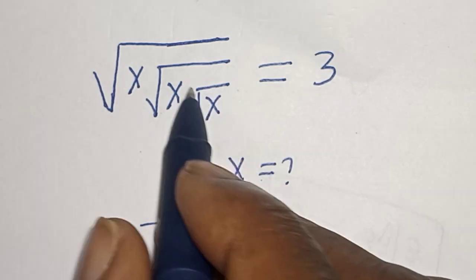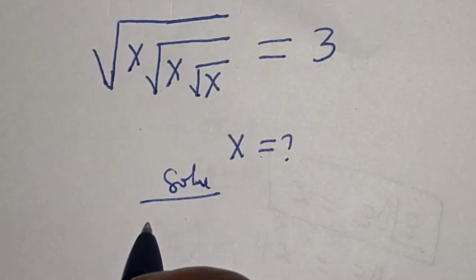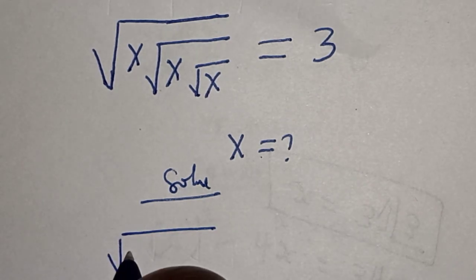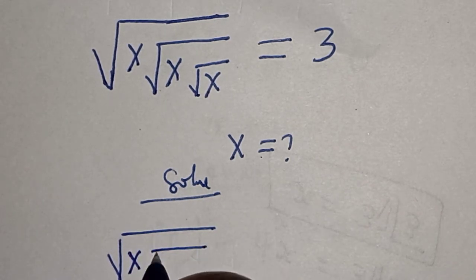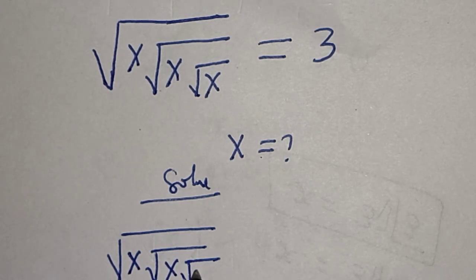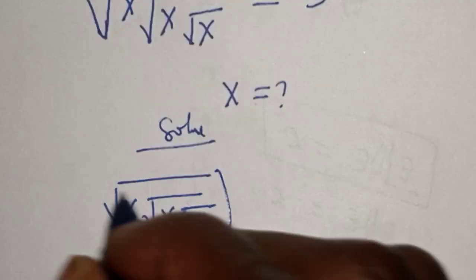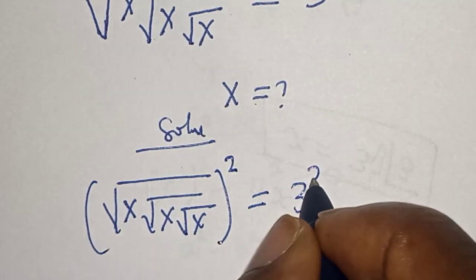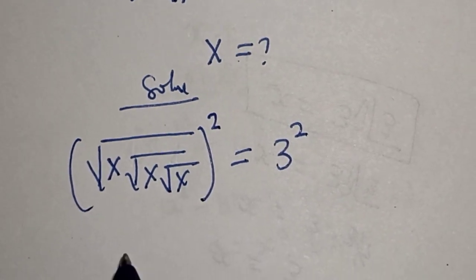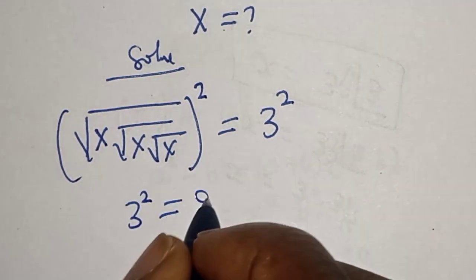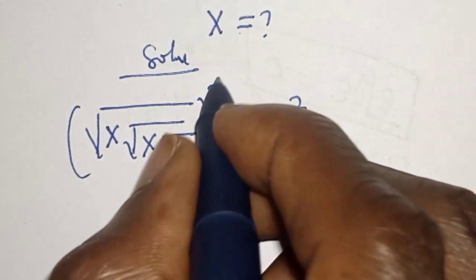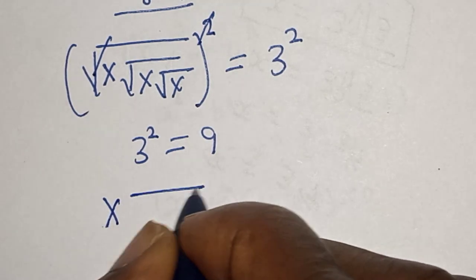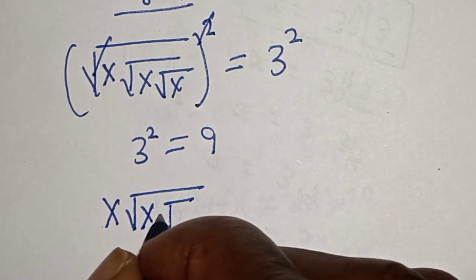Then, let's square both sides. That is, square root of x, square root of x, square root of x, squared, is equal to 3 squared. 3 squared is equal to 9. Then this cancels, giving us x times square root of x times square root of x is equal to 9.